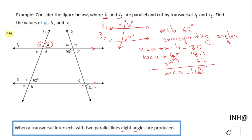V is down here — it is one of the eight angles created by lines L1, L2, and the second transversal. So I'm going to draw a simpler picture for this one as well.